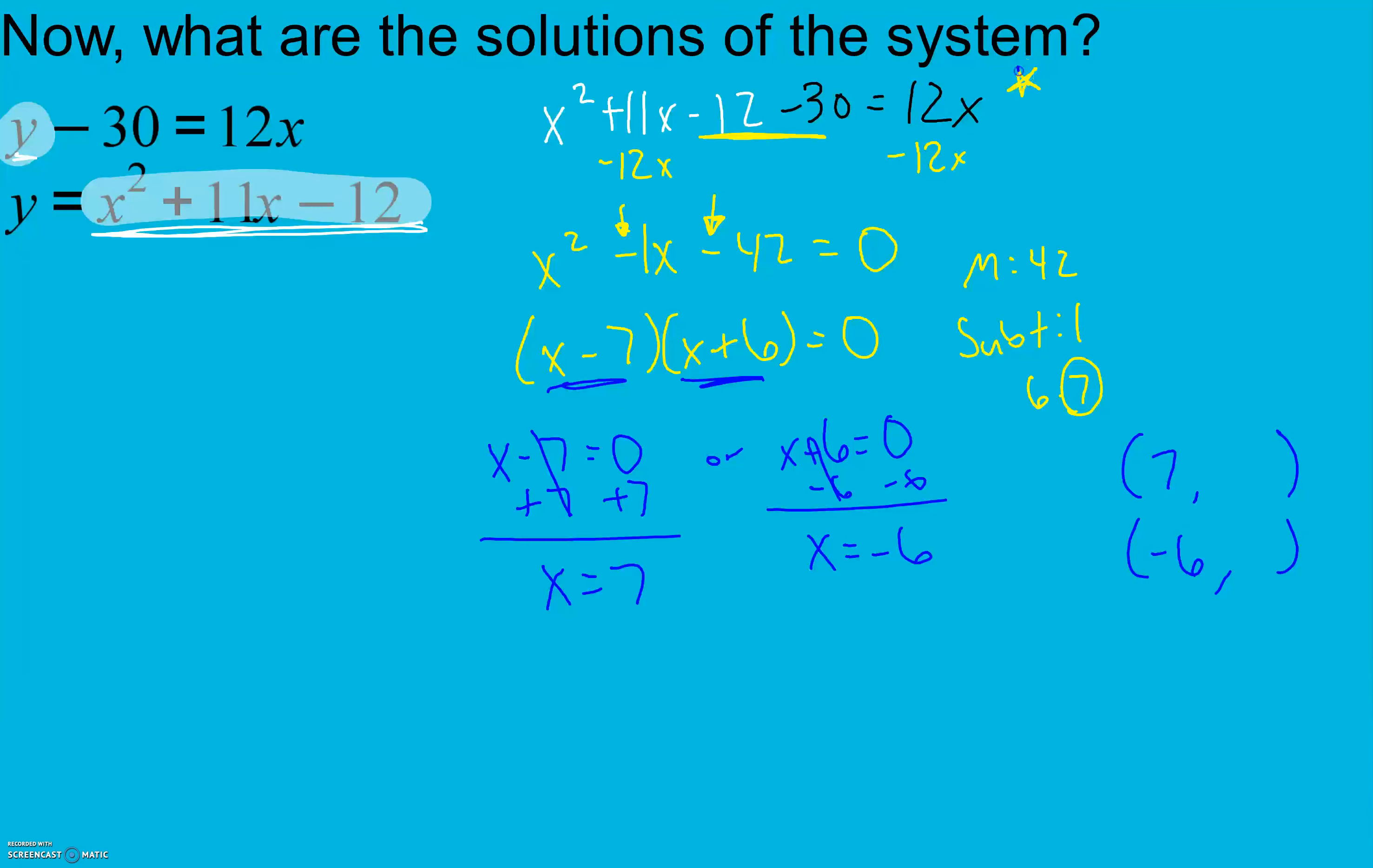From this step down to this step, nothing has changed. It's the same way we've been solving these all chapter long. The only difference now is that we also have to find our y values. So in order to do that, I take my x values and plug them into one of my equations. It doesn't matter which one. I'm going to use my top equation here. So y minus 30 equals 12 times x, which is 7, and solve for y. That gives me 114.